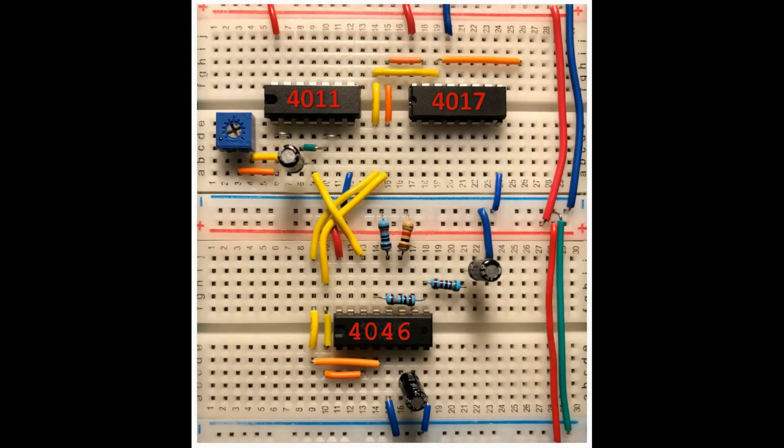This is the implemented circuit, where 4011 is used to implement the time-based oscillator by using two NAND gates. And we have the decade counter 4017 and the phase locked loop 4046.